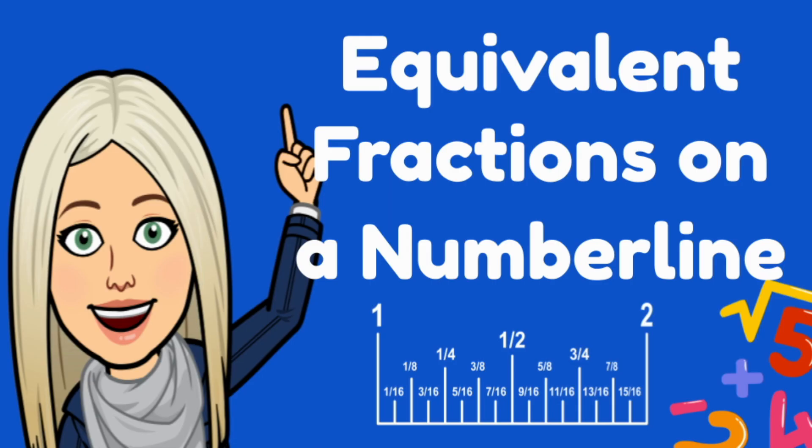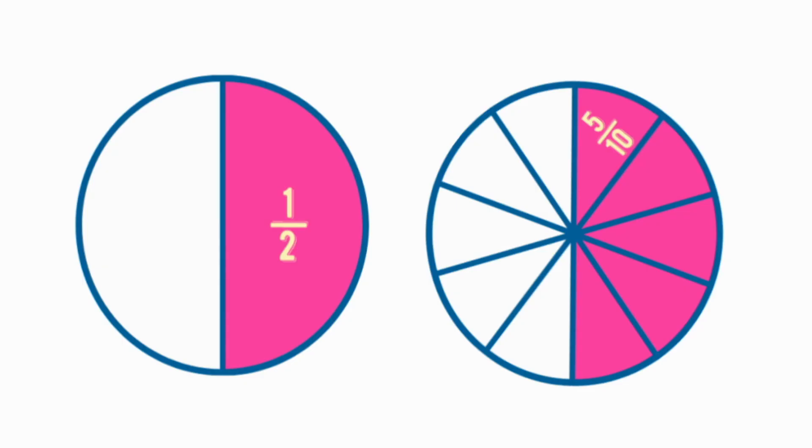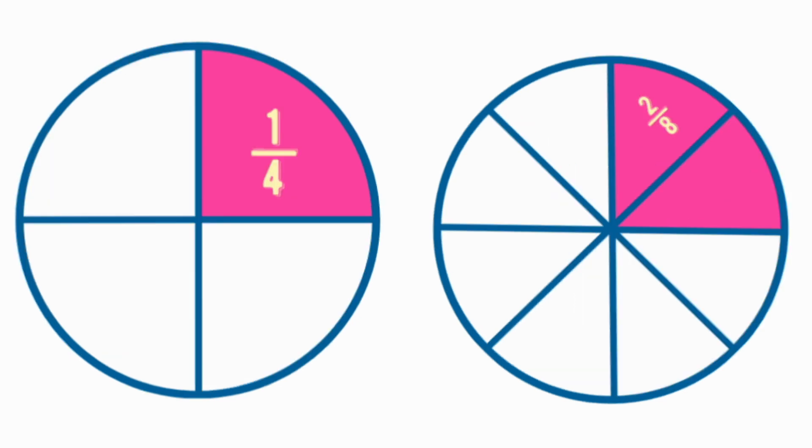How to find equivalent fractions using a number line. Equivalent fractions are fractions that have equal value even though they're divided into a different number of parts.